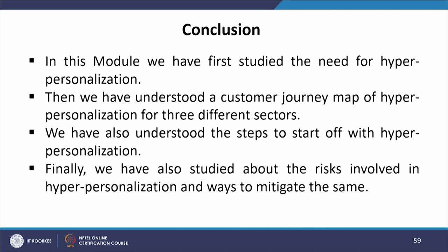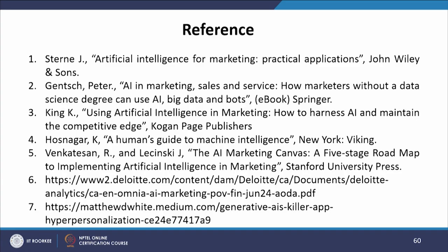To conclude, in this module we have first studied the need for hyper-personalization. Then we have understood a customer journey map of hyper-personalization from three different sectors. We have also understood the steps to start off with hyper-personalization. Finally, we have studied about the risks involved in hyper-personalization and ways to mitigate the same. These are the seven sources from which the material for this module was taken. Thank you.